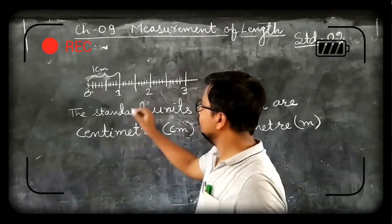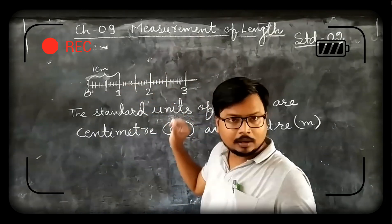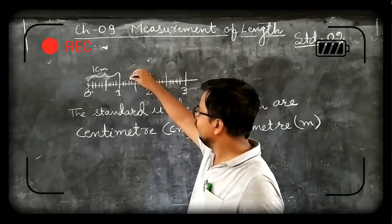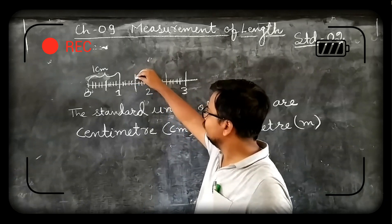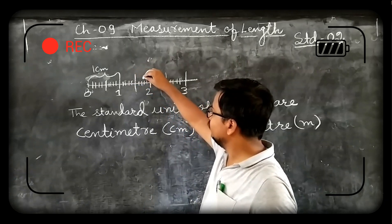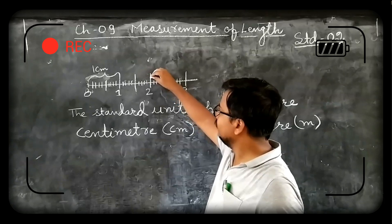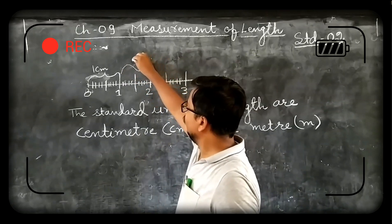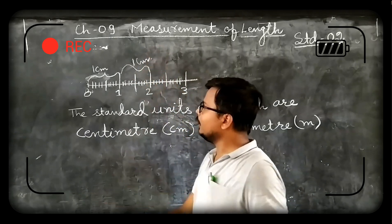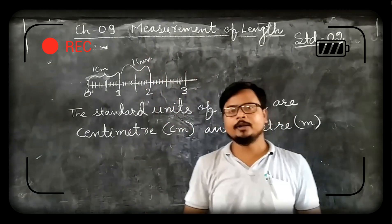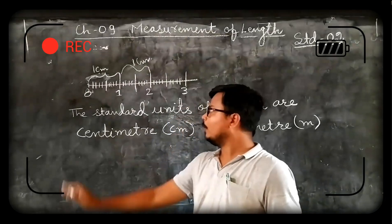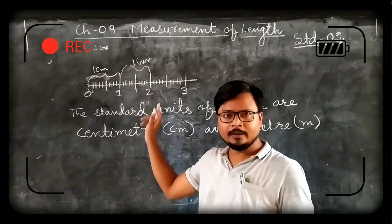Again if you go from 1 to 2, let us count and see: 1, 2, 3, 4, 5, 6, 7, 8, 9, and 10. So from here to there it is also 1 cm. At your home you can take the help of scale and understand about centimeters.